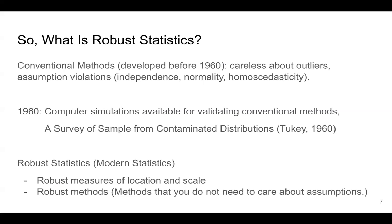Then what happened in 1960? Well, first, mathematicians started using computer simulations to validate conventional methods. And then they figured out, oh, a lot of times conventional methods don't work. And also a famous paper written by John Tukey in 1960 was published. A survey of sample from contaminated distributions. This paper basically means that a small departure, a slight departure from a normal distribution to heavy-tailed distribution can mess up a lot of things.